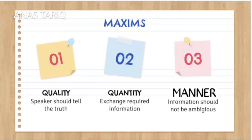For example, someone asks you: did you enjoy a picnic last weekend? And you reply yes or no. Here, you only pass the required information and the maxim of quantity is being followed. But if you respond like: oh, we went in beautiful buses, there was plenty of food and so on — here you exchange information more than required and the maxim of quantity is being violated.